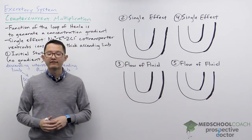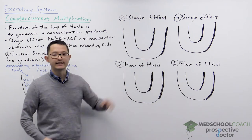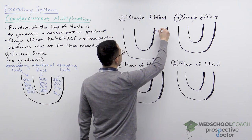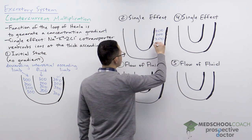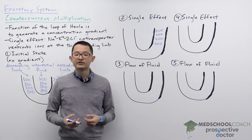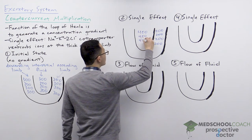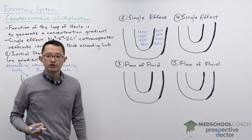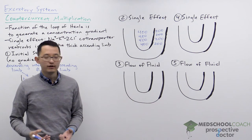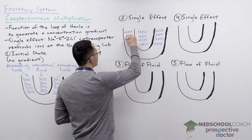Now we're going to allow the single effect to occur. The single effect is going to remove solutes from the ascending limb of the loop of Henle, so the concentration would go from 300 down to maybe 200. Since solutes are being removed from the ascending limb, they're going into the interstitial fluid, so the concentration of the fluid around the renal tubule is going to increase. Since the descending limb is water permeable, its concentration will always equilibrate to the interstitial fluid, so it will also become 400.